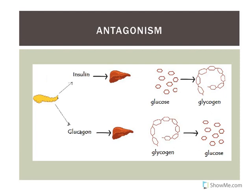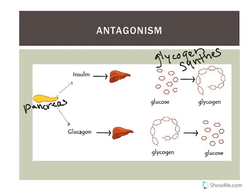An example of antagonism is the pancreas, which releases both insulin and glucagon. These two hormones are antagonistic to each other. Insulin stimulates glycogen synthesis — taking glucose and forming a branched storage molecule. Glucagon does the opposite: it stimulates glycogen breakdown. So they are referred to as being antagonistic.